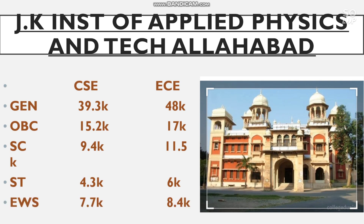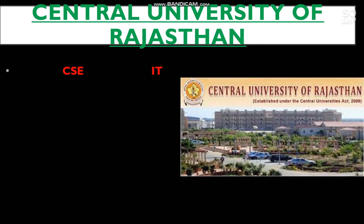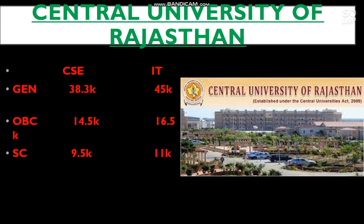Number 7 is Central University of Rajasthan. Cutoff for CS and IT: General — CS 38,300, IT 45,000; OBC — CS 14,500, IT 16,500; SC — 9,500 and 11,000; ST — 3,200 and 4,800; EWS — 7,000 and 8,300 for CS and IT respectively.